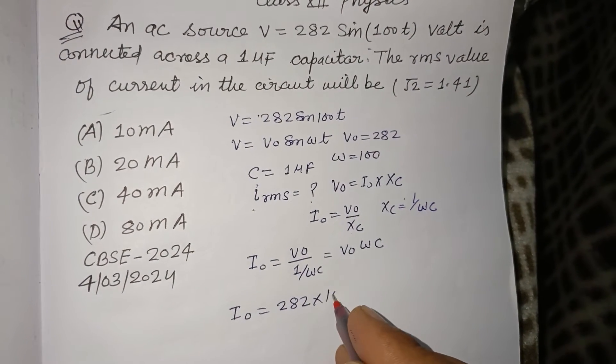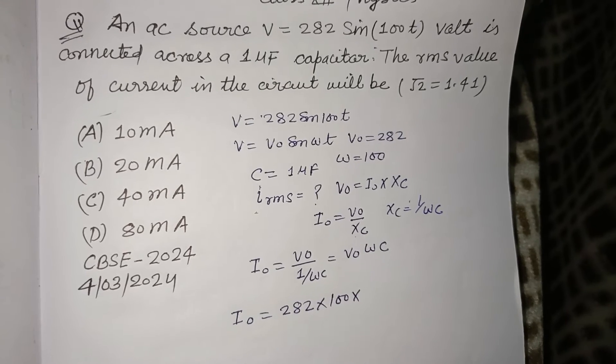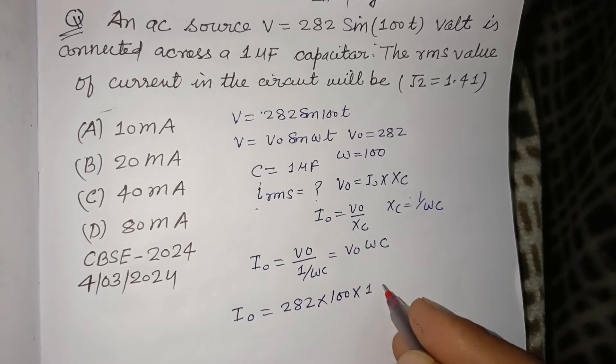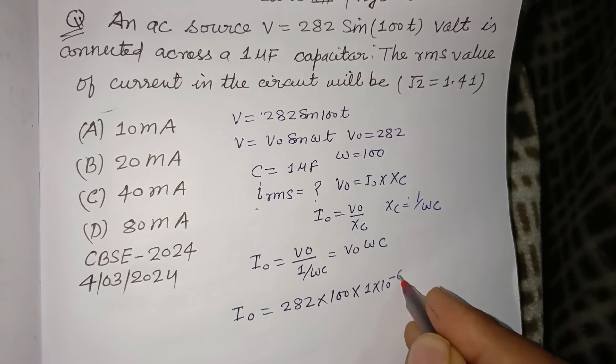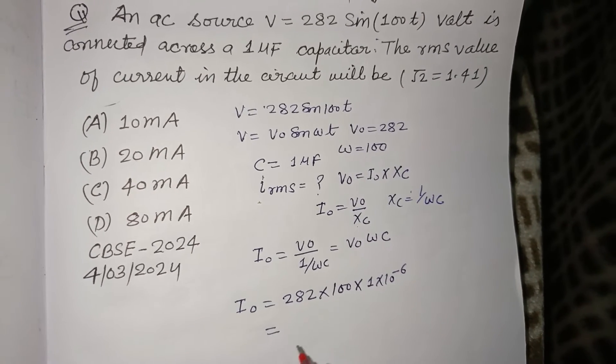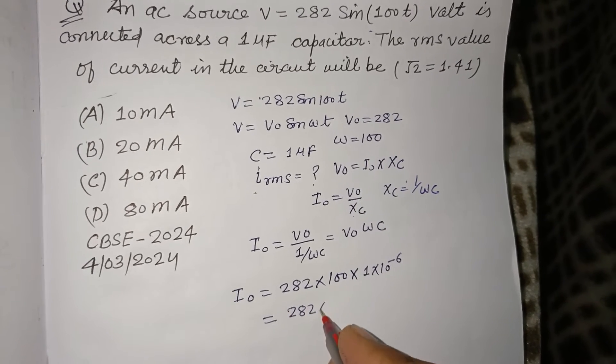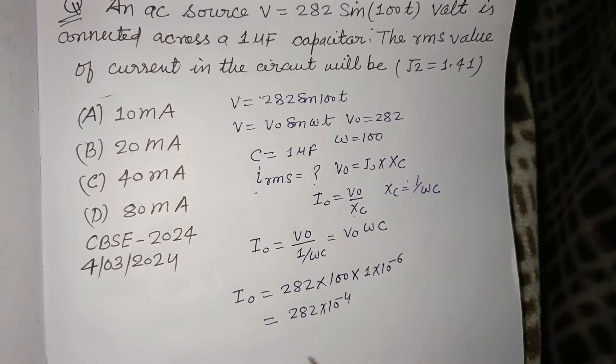Omega is 100, and C is 1 microfarad = 1 × 10^-6 farads. So we get I0 = 282 × 100 × 10^-6 = 282 × 10^-4 amperes.